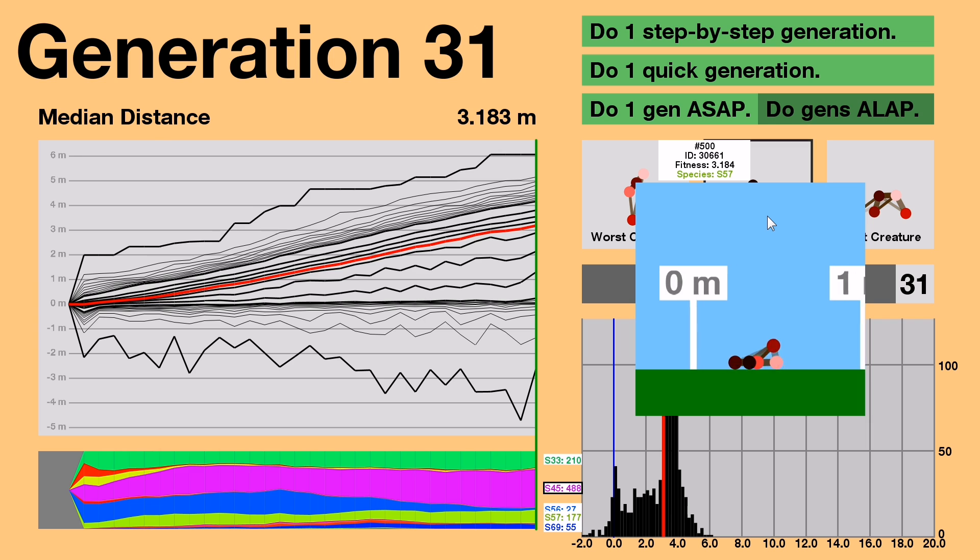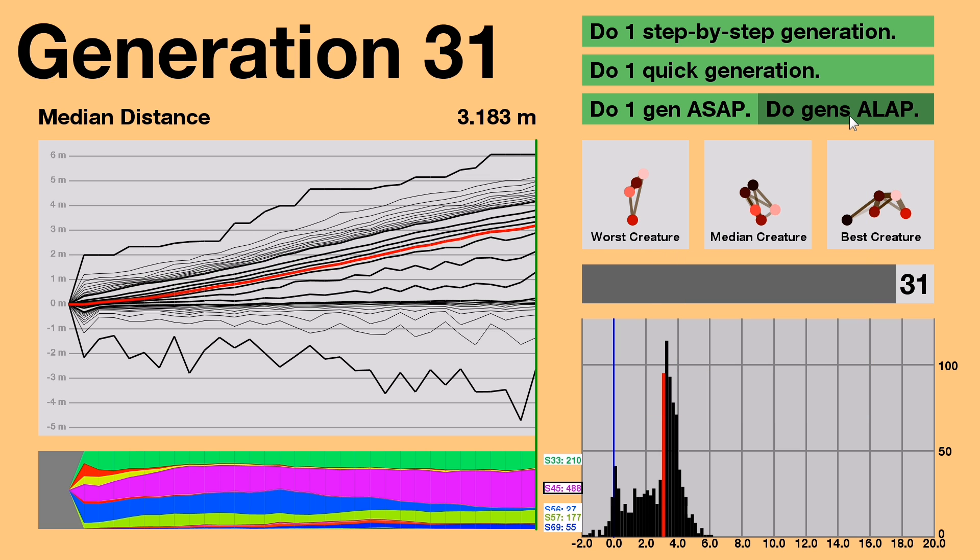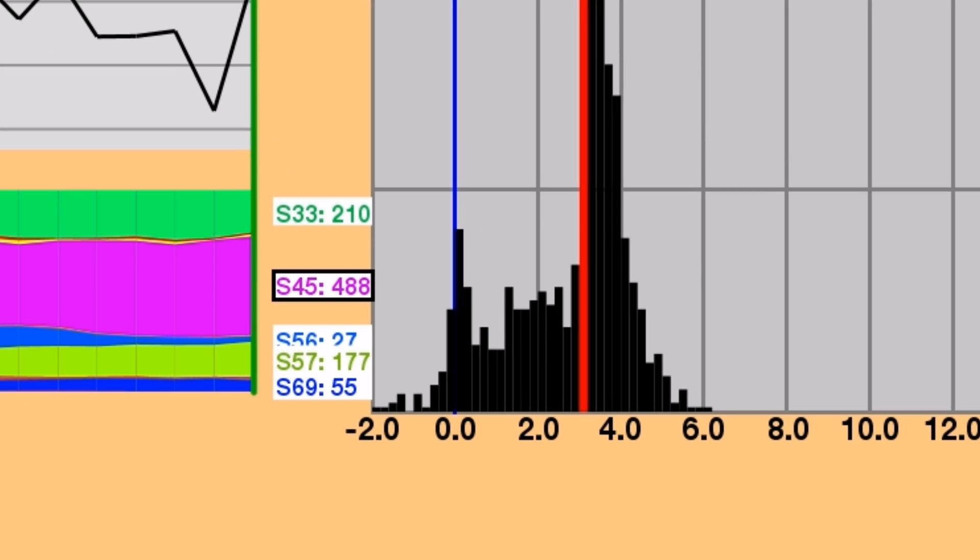S5-7, aka the mega creature, has taken over both the median spot and the best creature spot, though it doesn't take the plurality. S5-6, the original champion, has gone under the radar, and bigger species, such as S6-9, are starting to rise.